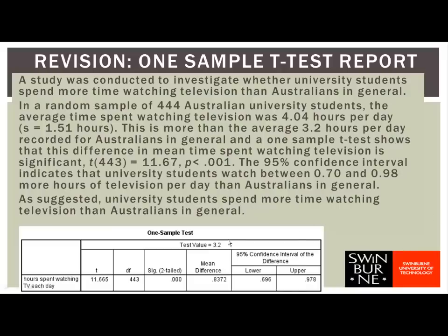Looking at the one-sample t-test output, here's our reference mean — 3.2 hours was the mean time spent watching television by Australians in general. The mean in our sample was just over 0.8 hours longer than this. So this mean difference here is the difference between the reference mean and the mean in the sample. We want to know whether the difference between the mean in our sample and the reference mean is big enough to convince us that all university students, on average, watch more TV per day than Australians in general.